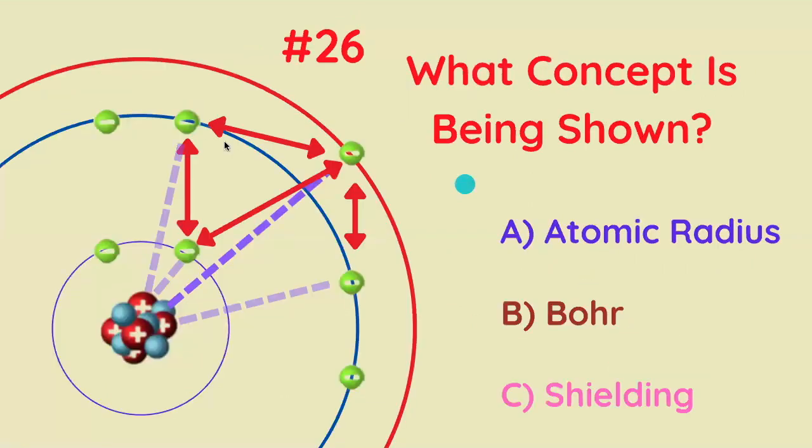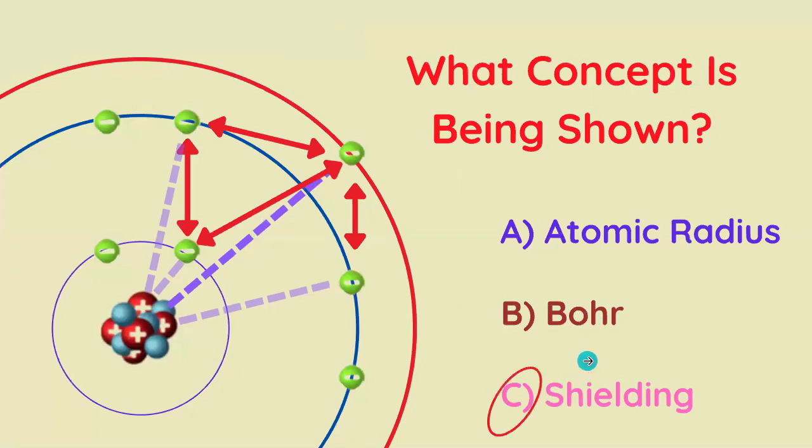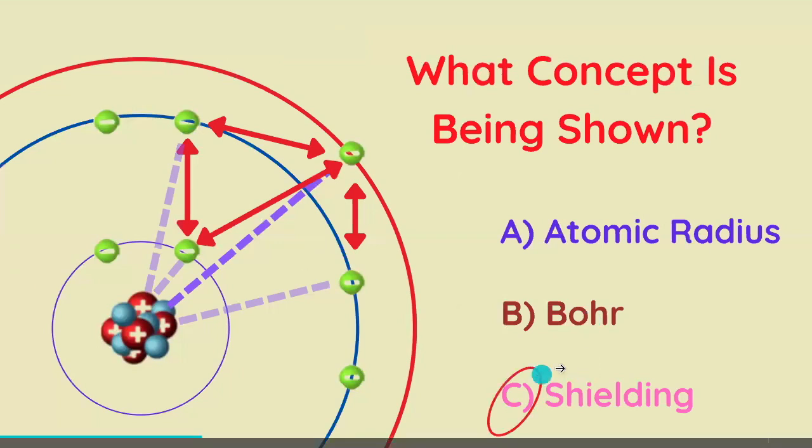Which concept is being illustrated in this diagram? Atomic radius, Bohr, or shielding? The correct answer is shielding.